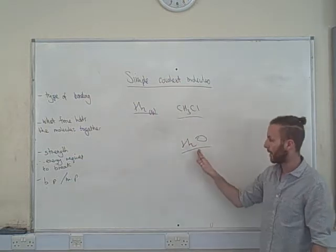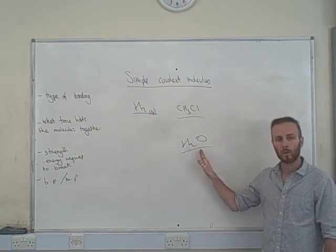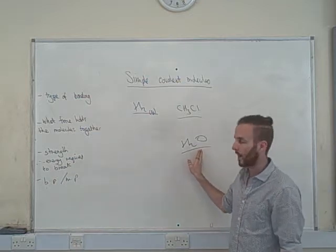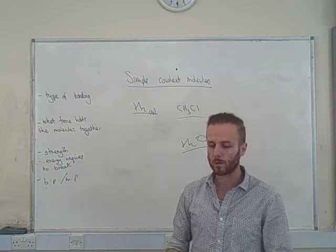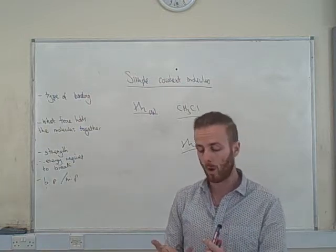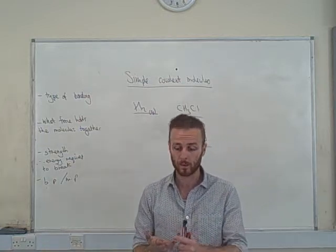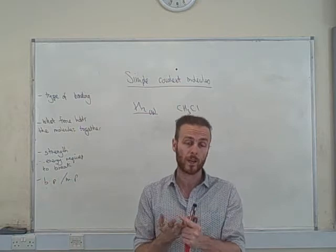So out of the three of these, this would have the highest boiling and melting point. But just to clarify, all of these would be very, very low compared to a metallic, a covalent, or an ionic bond. So giant ionic, giant metallic, or giant covalent.